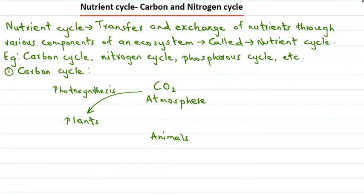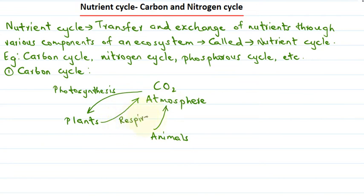Through the food chain, animals also obtain carbon. This carbon that is utilized from the atmosphere also needs to be given back to the atmosphere so that a proper balance is maintained in the ecosystem. This happens by respiration. So plants and animals both perform respiration, and by respiration, carbon dioxide is again given back to the atmosphere.